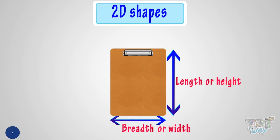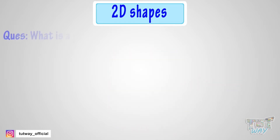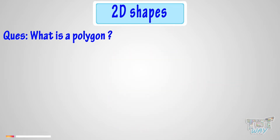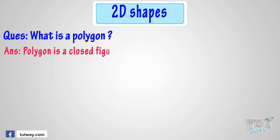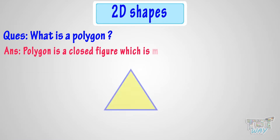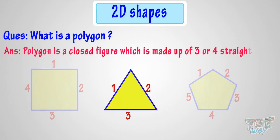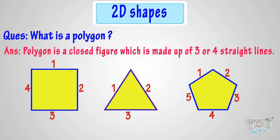And kids, do you know what is a polygon? A polygon is a closed figure which is made up of three or more straight lines.